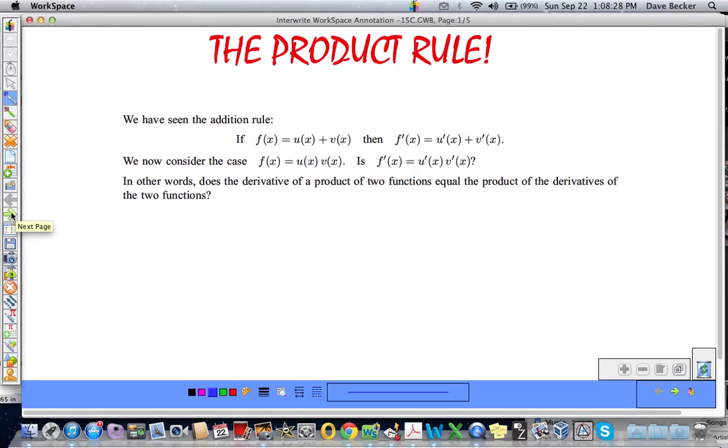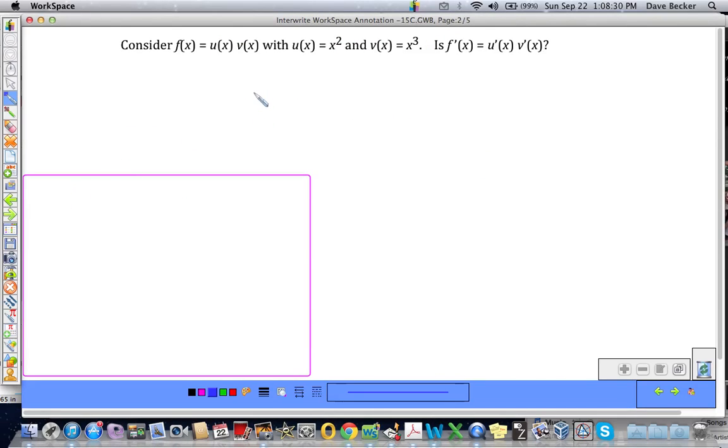So, let us ponder that by considering this function, u of x, v of x with u of x equal to x squared and v of x equal to x cubed. Is the derivative equal to the derivative of u of x times the derivative of v of x? And hopefully you're saying, well Mr. Becker, why don't you just multiply them and make them x to the fifth and then take the derivative? You can definitely do that, but we will have more complicated functions that are products as you shall see in a minute.